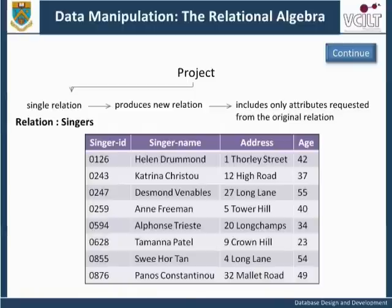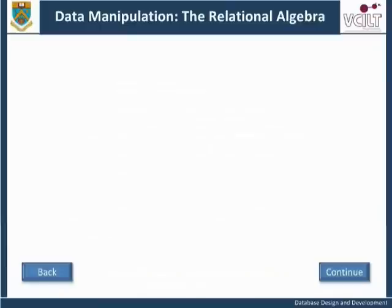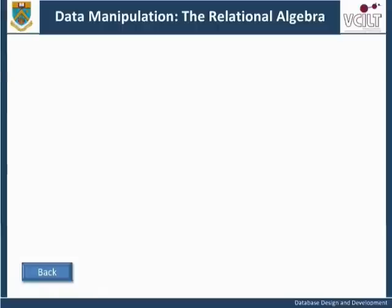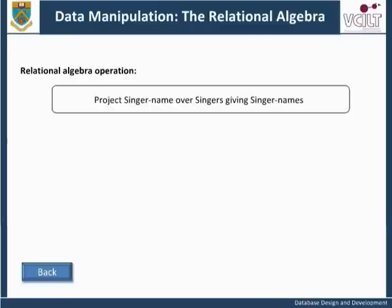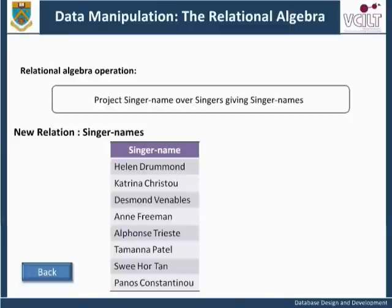If only the names are extracted, the information that there are singers with the same name will not be preserved in the new relation, as only one copy of the name would appear. The column for the attribute singer names is shown outlined in the relation here. The following Relational Algebra Operation creates a new relation with singer name as the only attribute: Project singer name over singers giving singer names.